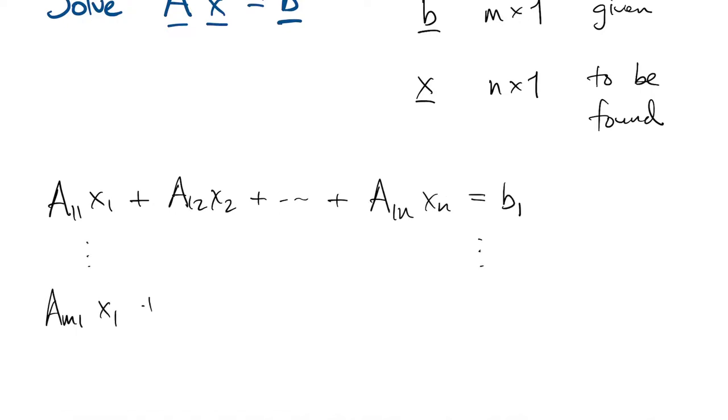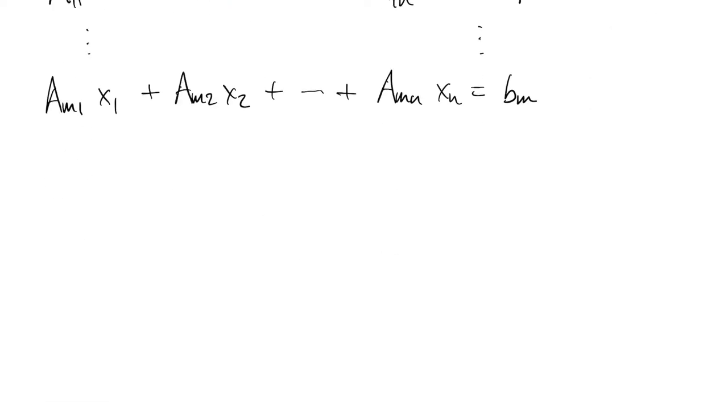So if we write those out, the coefficients of A multiply the x's, and then the b's sit on the right-hand side. So it's always important to remember that the rows of A correspond to equations, and the columns of A correspond to the variables.